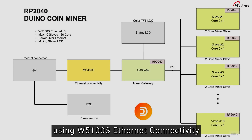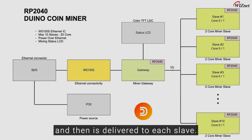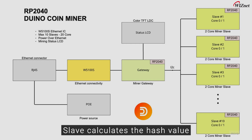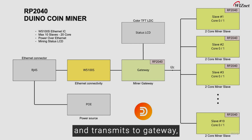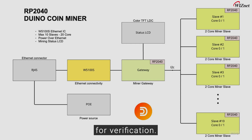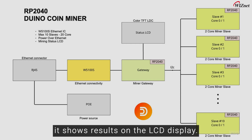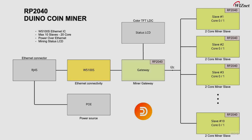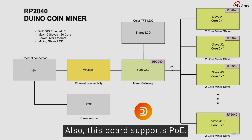The hash is then delivered to each slave. Each slave calculates the hash value and transmits it back to the gateway, which passes the data to the Duinocoin server for verification. Once verified, the results are shown on the LCD display. This board also supports PoE.